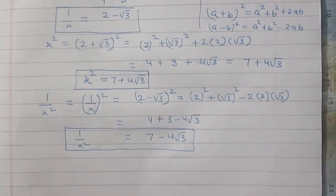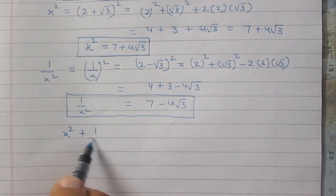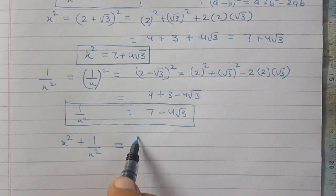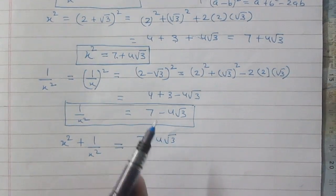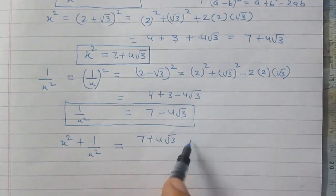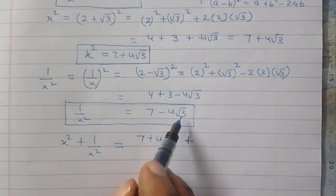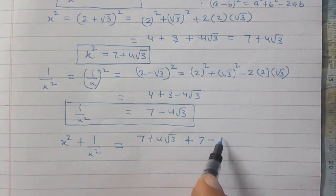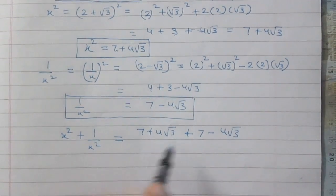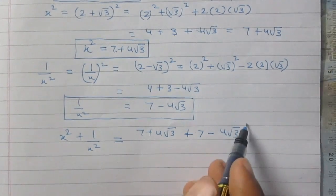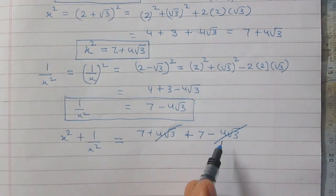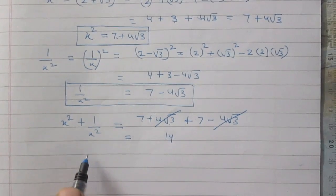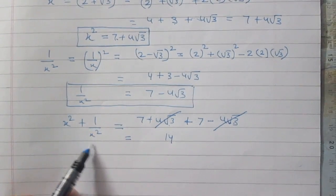Now we are supposed to find the value of x square plus 1 upon x square. We have found that x square is equal to 7 plus 4 times square root 3, and 1 upon x square is 7 minus 4 times square root 3. Substituting these values, the 4 root 3 and minus 4 root 3 cancel each other because their sum is 0. So we have 7 plus 7, which is 14. Therefore, the value of x square plus 1 upon x square is 14.